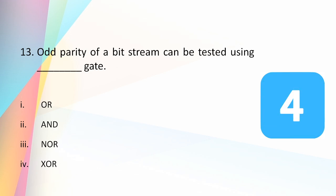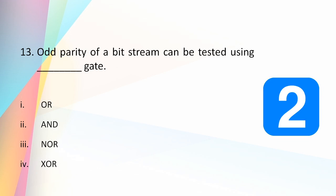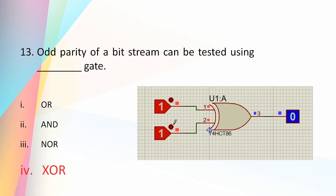The odd parity of a bitstream can be tested using which gate: OR, AND, NOR, or XOR? The answer is XOR — an XOR gate can check the odd parity of a bitstream.